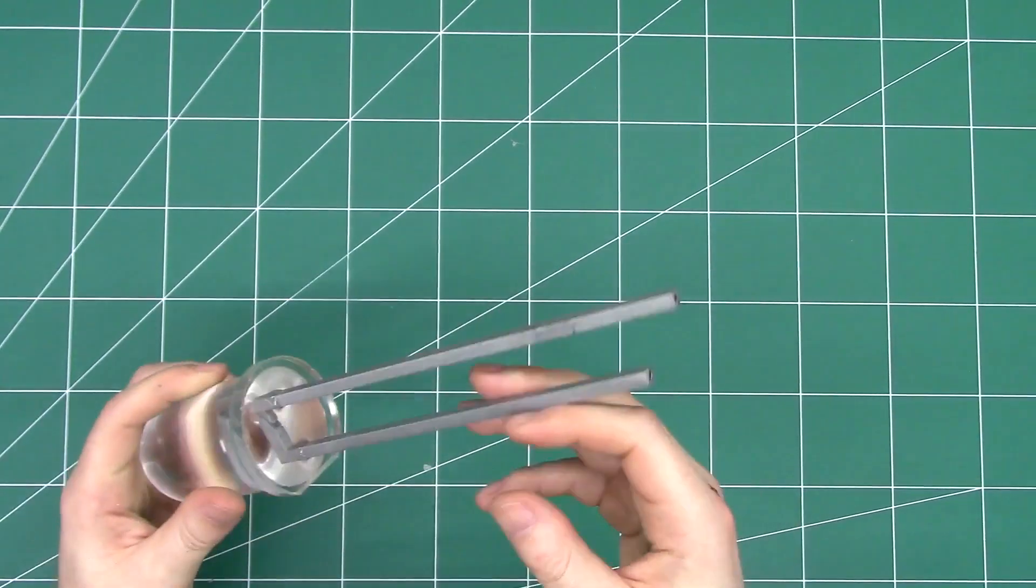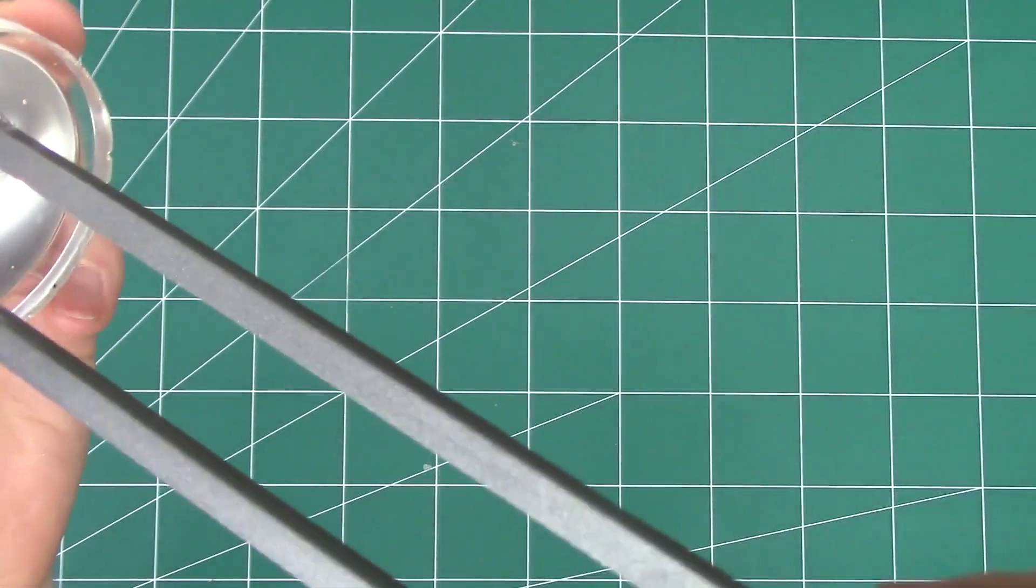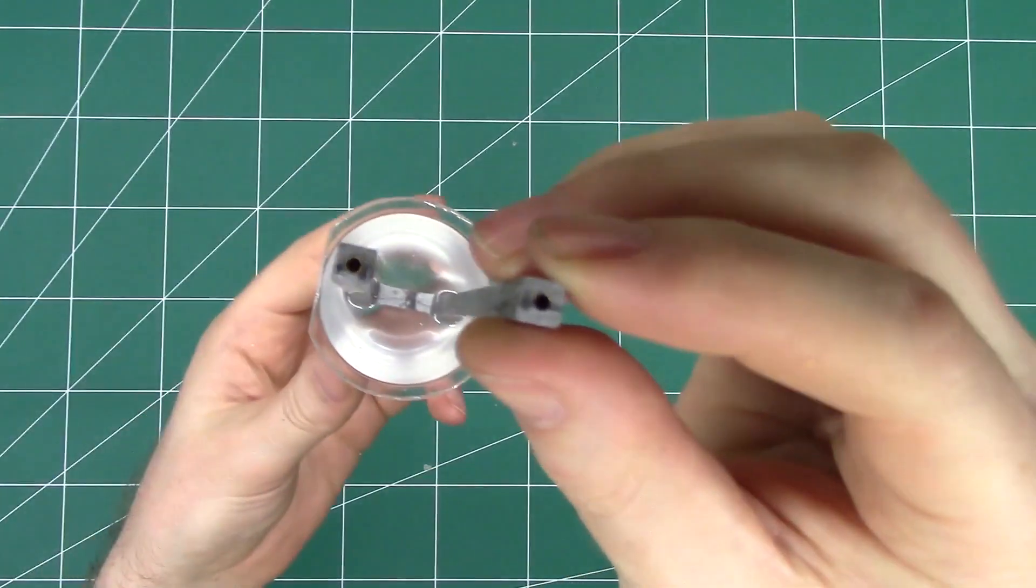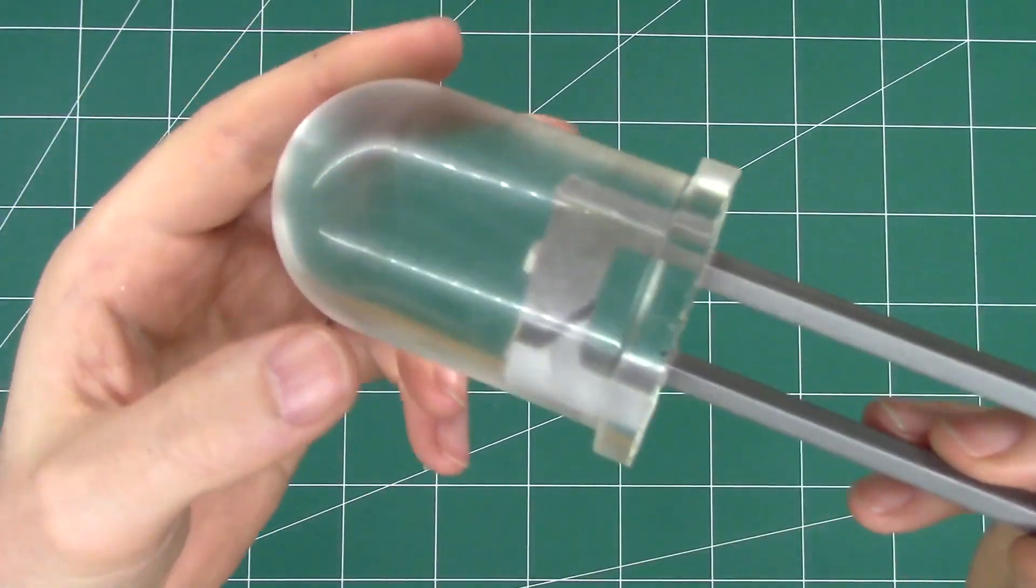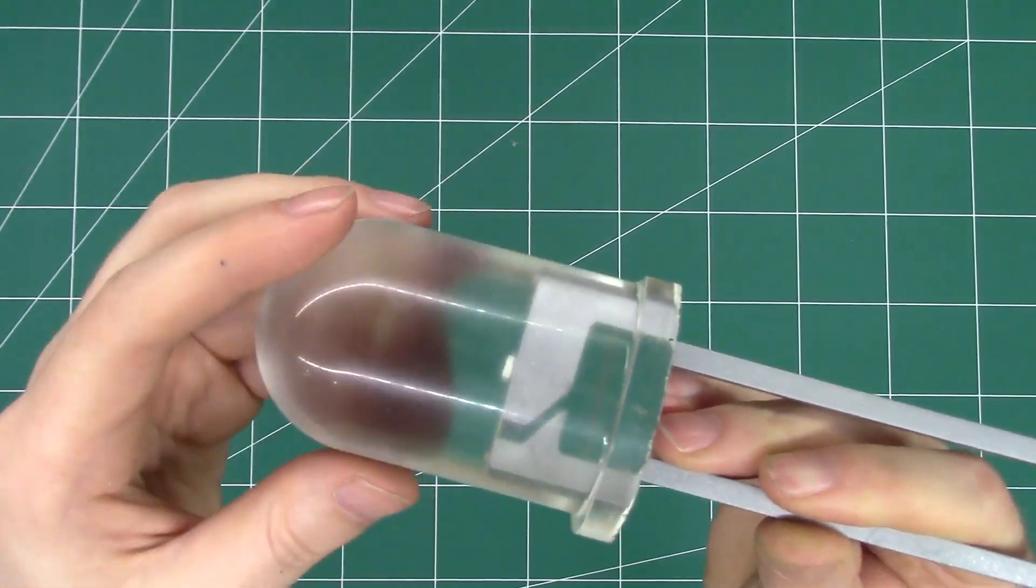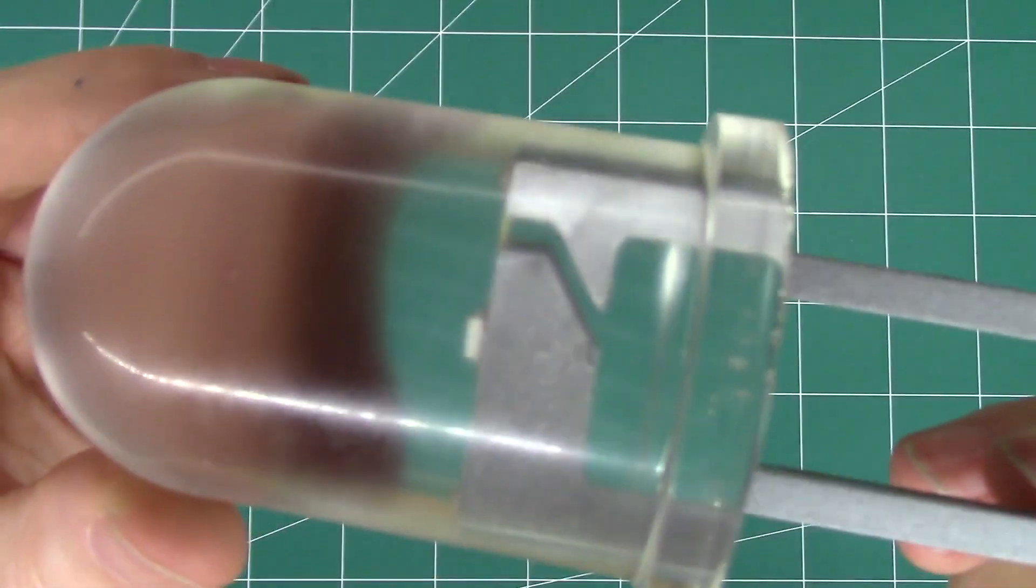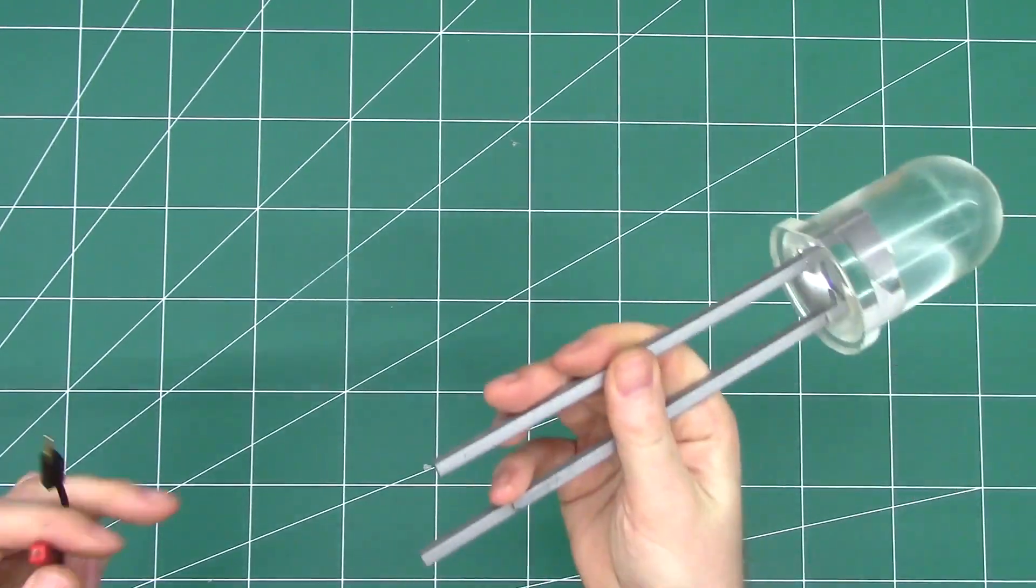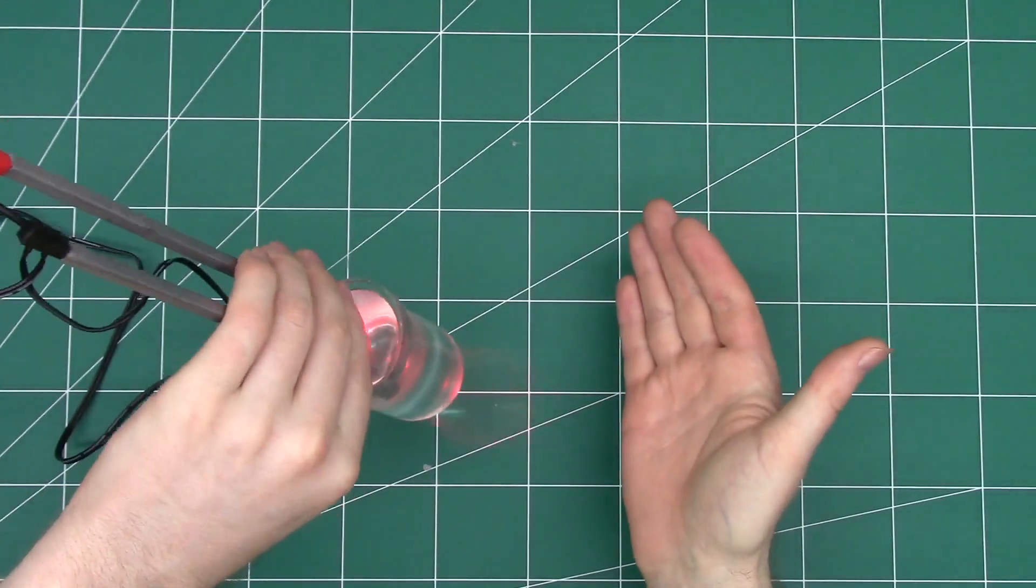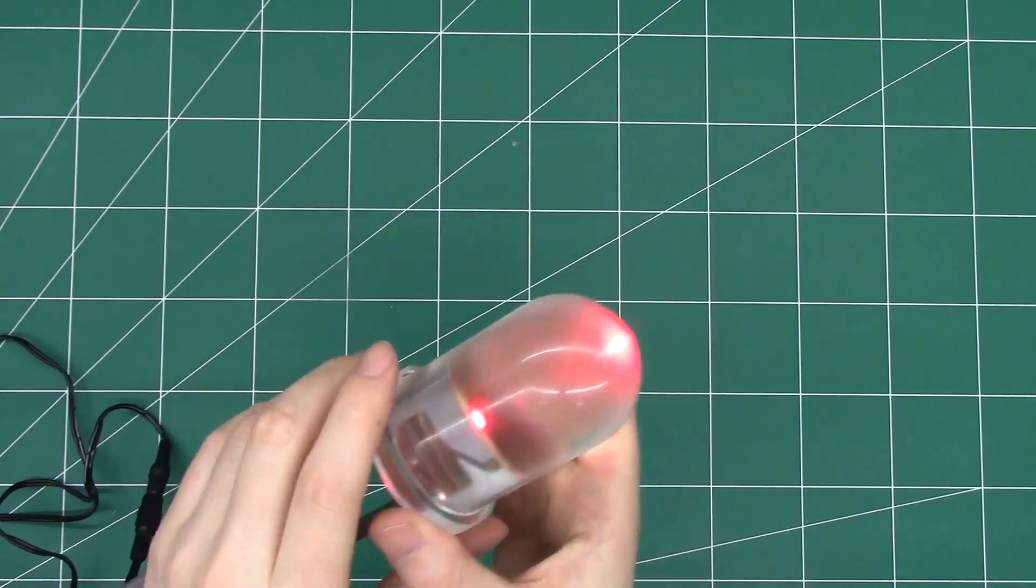So I went ahead and cast the new legs. This time I used a silver powder incorporated into the resin. I also cast the clear resin dome. You can see all the details. If I connect this up to a power source, you can see there.